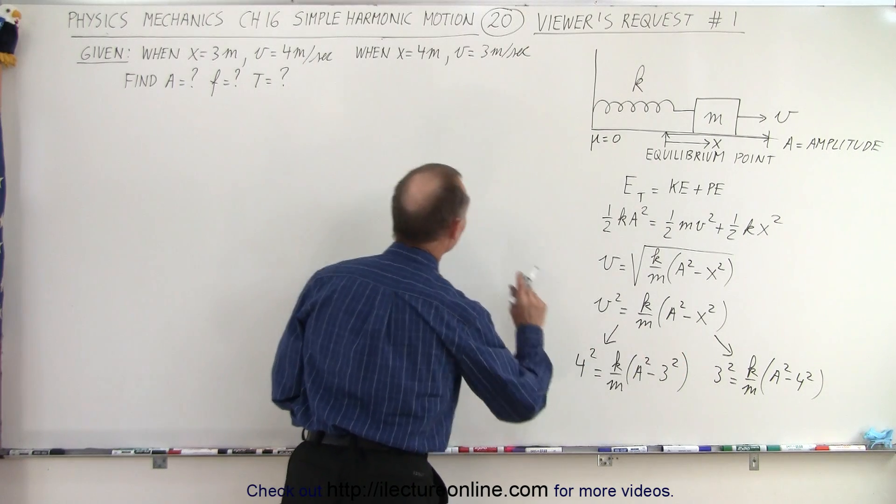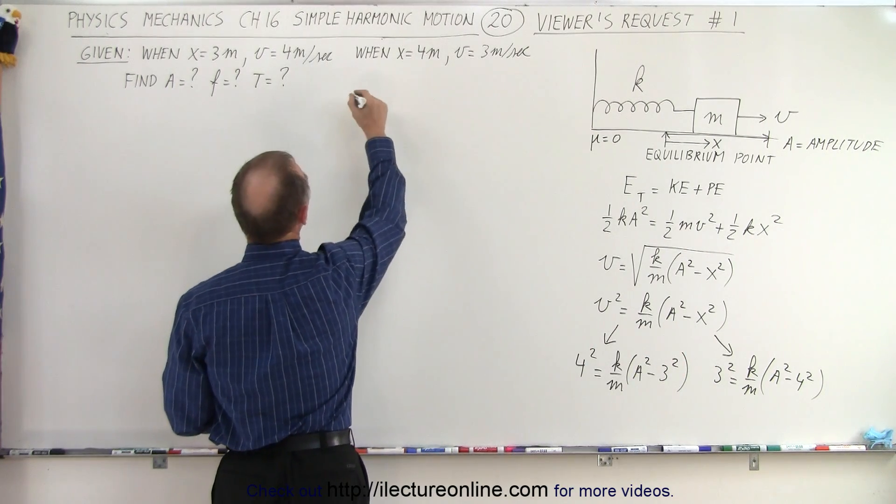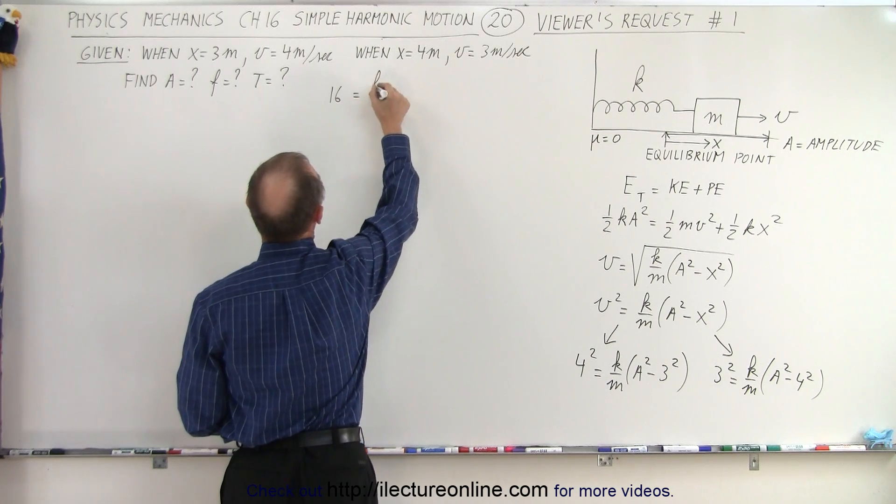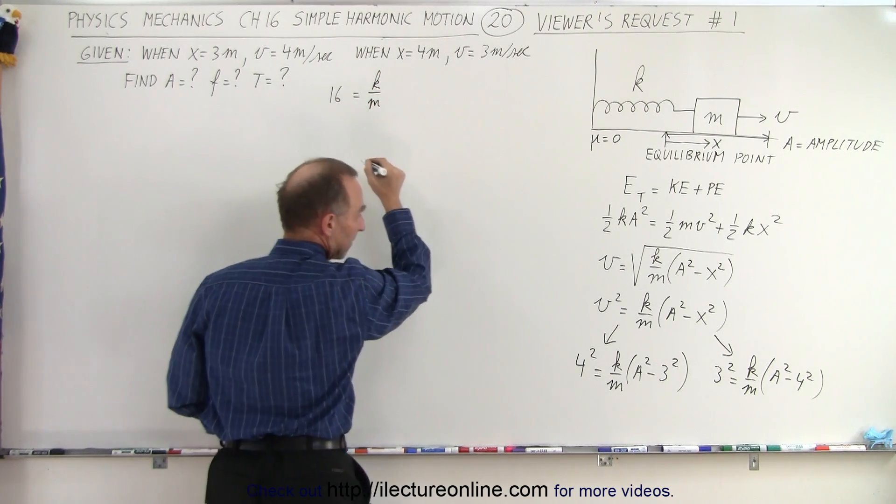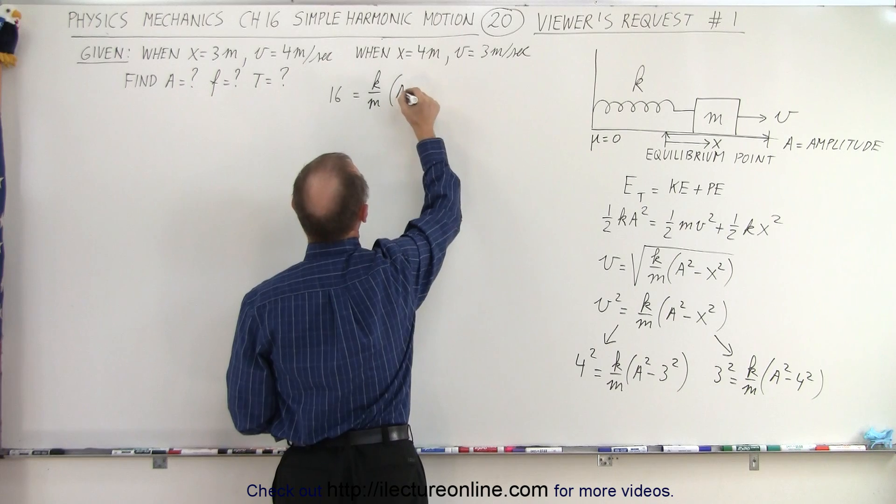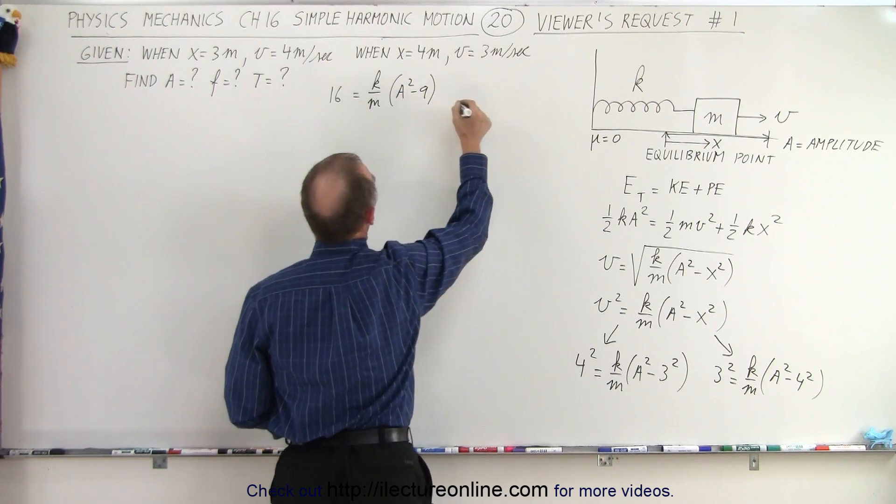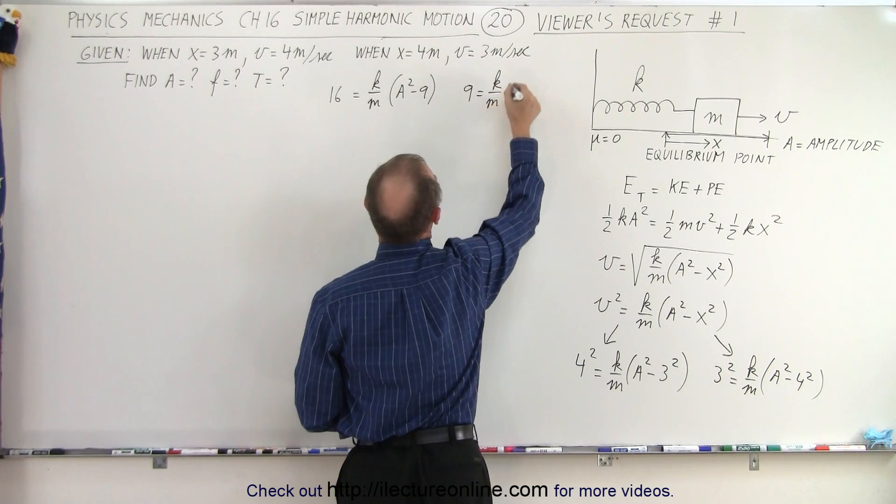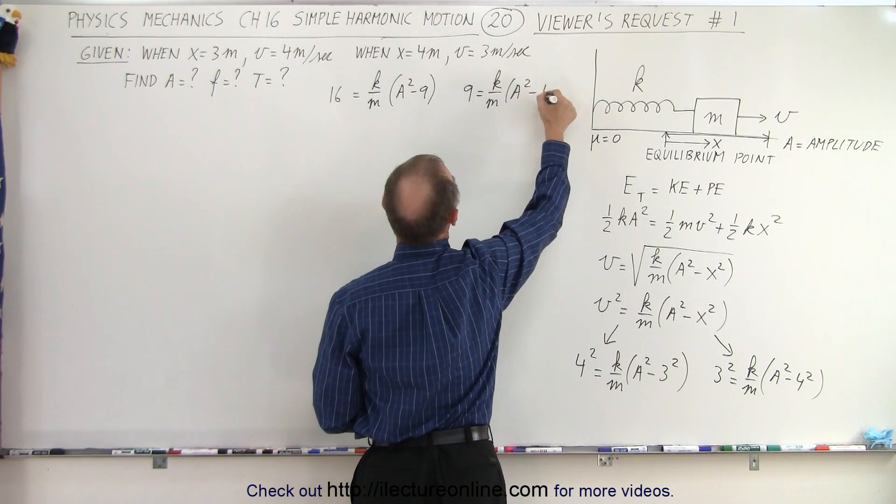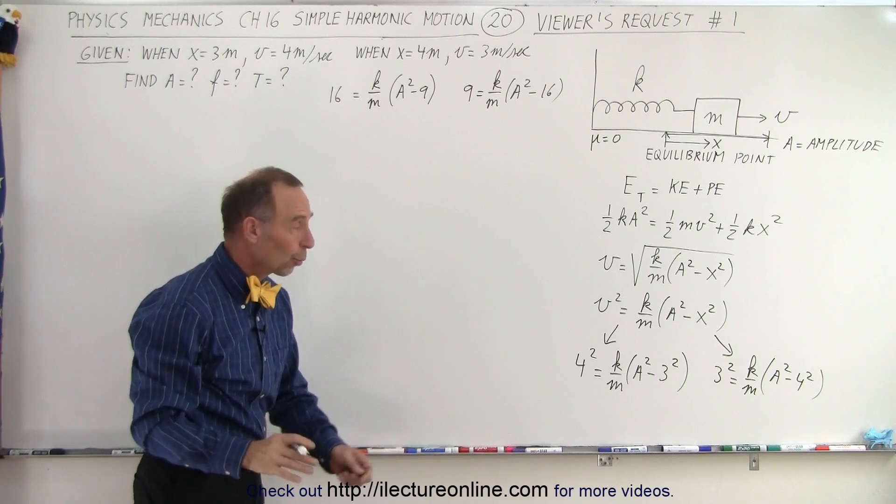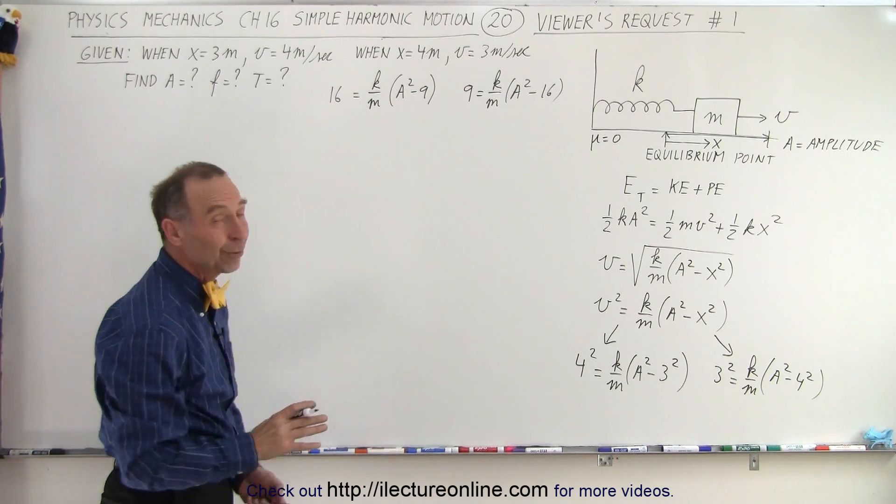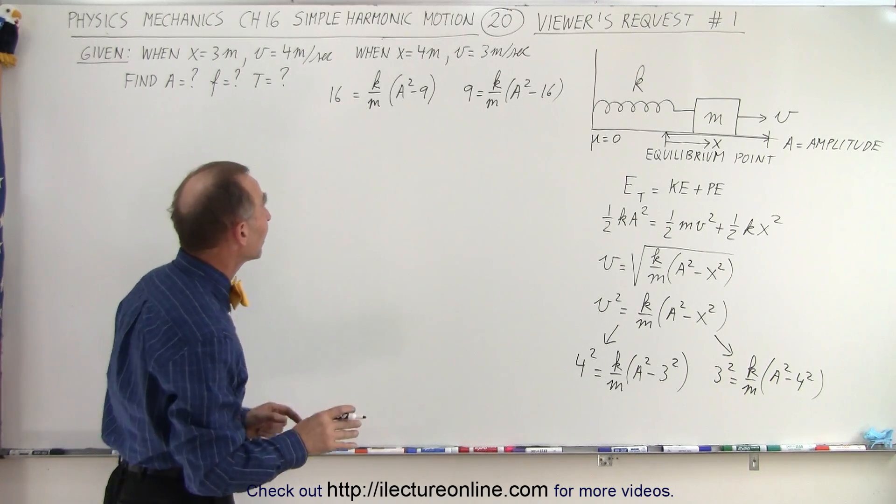So when we then multiply everything out, we get the following: we get 16 equals k over m times a squared minus nine, and we get nine equals k over m times a squared minus 16. So those are the two equations when we work out those squares.